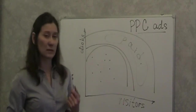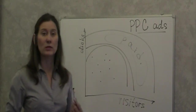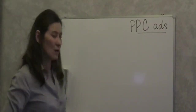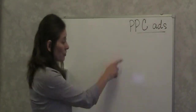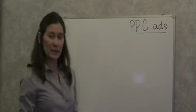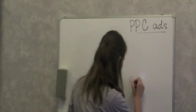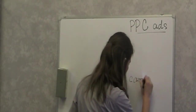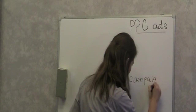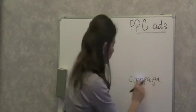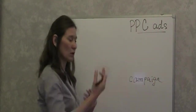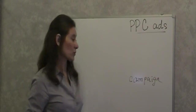And now how it works. You set up your campaign — for example, a text ad campaign — which includes a title, description, and a link to your landing or squeeze page.